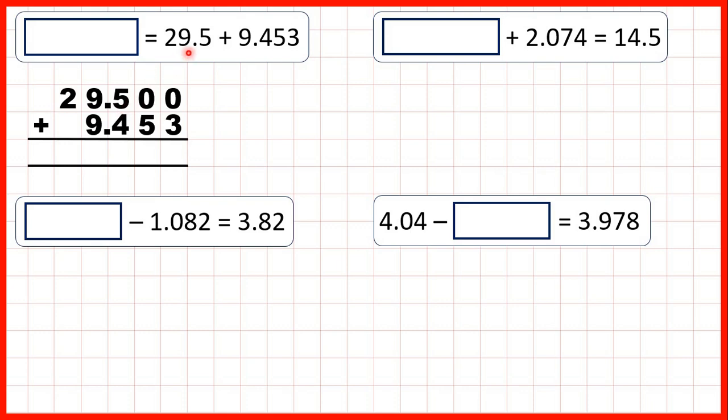We haven't changed the question, because all these zeros tell us is that we don't have any hundredths or thousandths in 29.5. We need to remember to copy the decimal point down into our answer, so that our decimal points are all lined up. Now we can use column addition. 0 plus 3 is 3, 0 plus 5 is 5, 5 plus 4 is 9, 9 plus 9 is 18, so 1 8, and 1 plus 2 is 3. So our answer is 38.953.